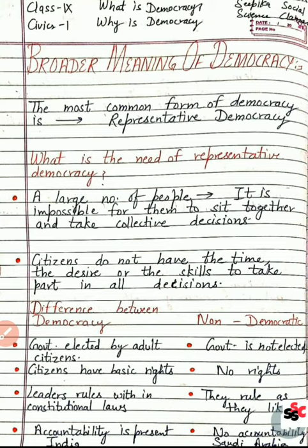Democracy और non-democracy में basic difference यह है: democracy में government is elected by adult citizens, जबकि non-democratic में government elect नहीं की जाती — monarchy rule होता है। Democracy में लोग अपने representatives को चुनते हैं — 18 years और उससे अधिक age के लोग। Citizens को basic rights मिलते हैं, जबकि non-democratic country में rights provide नहीं किये जाते। Democratic government freedom of expression, freedom to form associations, freedom to choose any occupation — ये सारी choices provide करती है, जो non-democratic government नहीं करती।